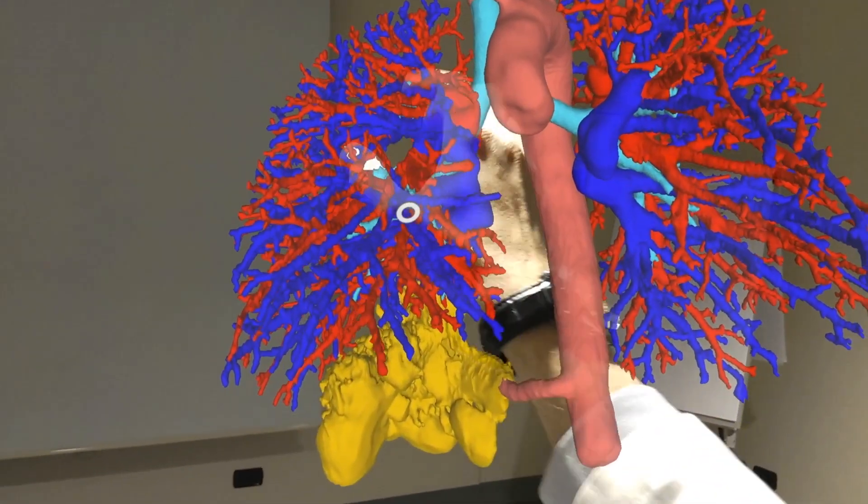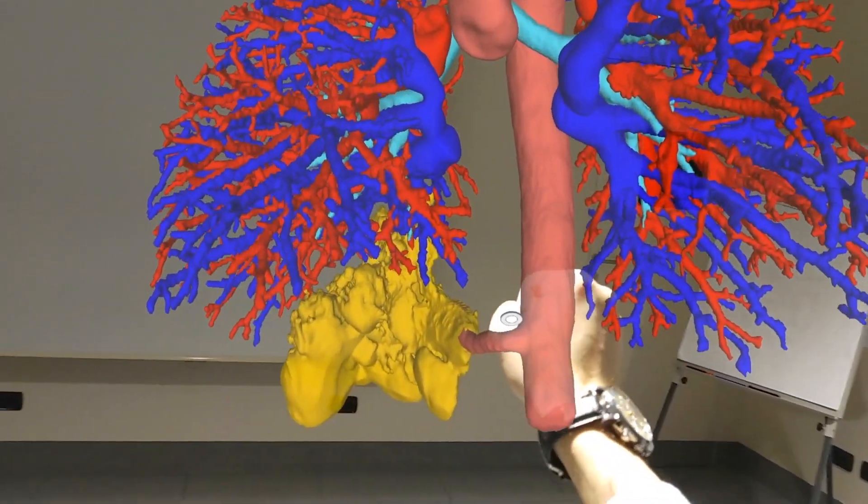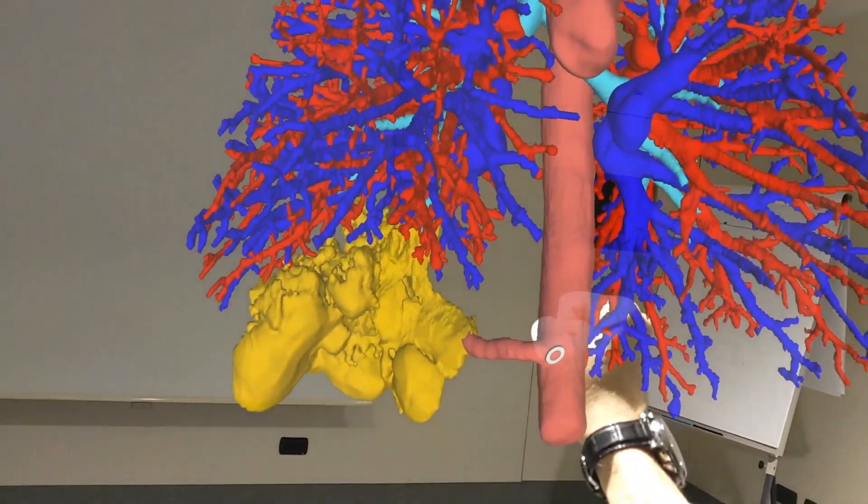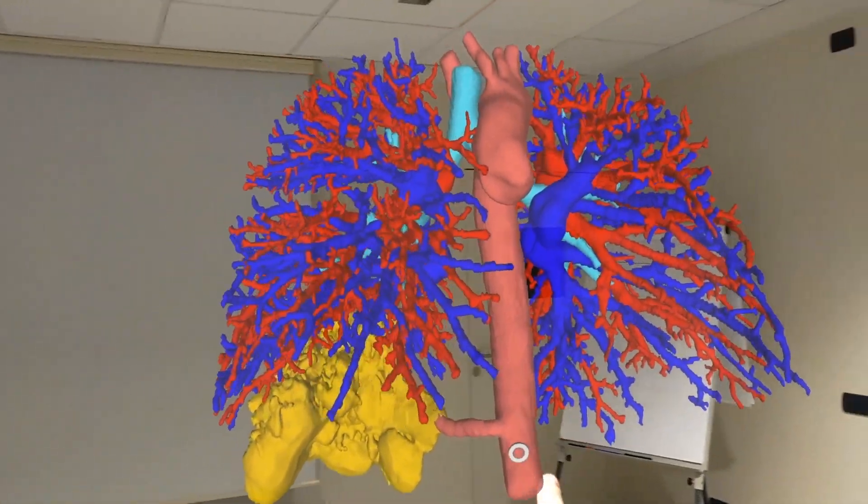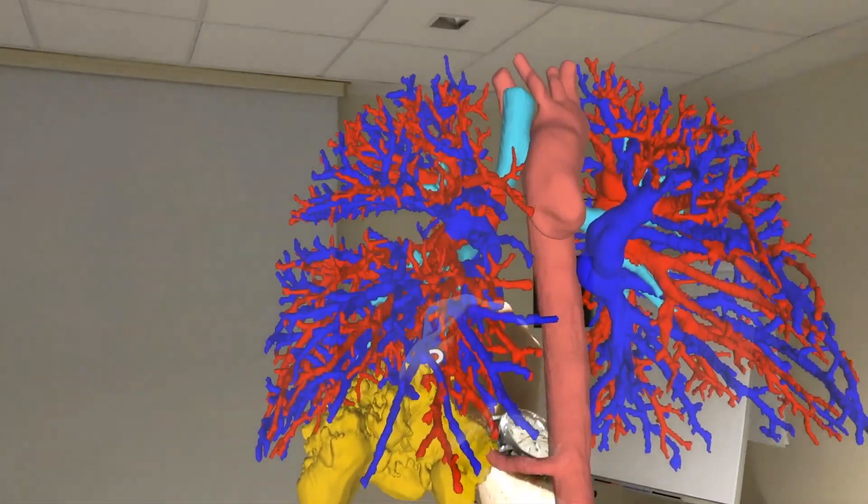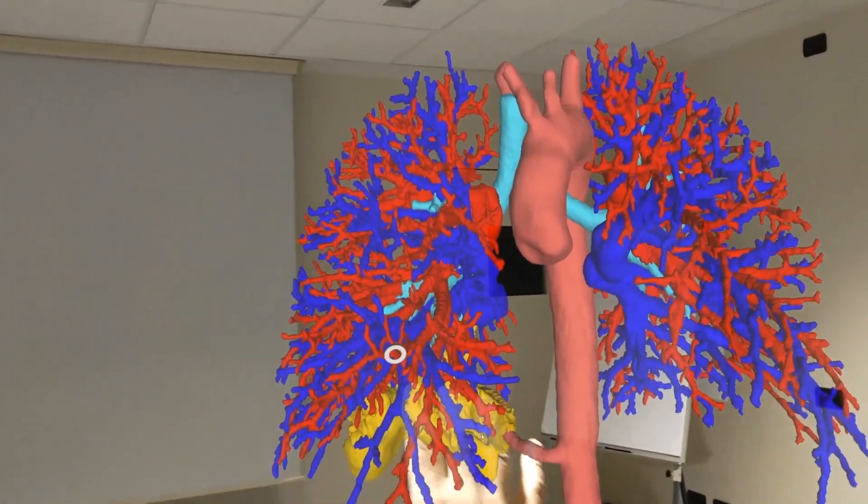This is a case of a 38-year-old patient with a previous history of colonic cancer in Lynch syndrome. She was referred to our department because of a pulmonary mass of the right lower lobe.